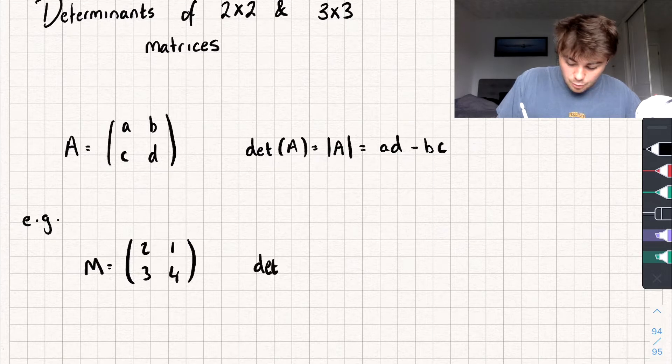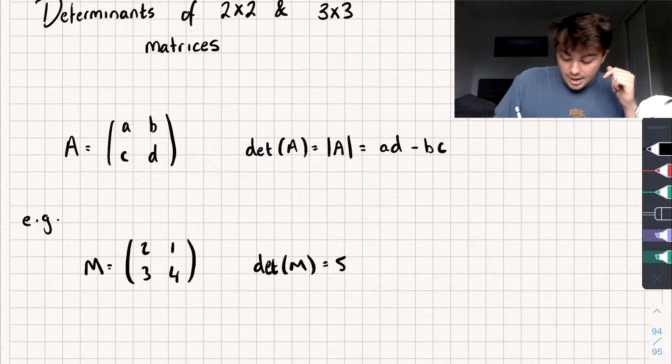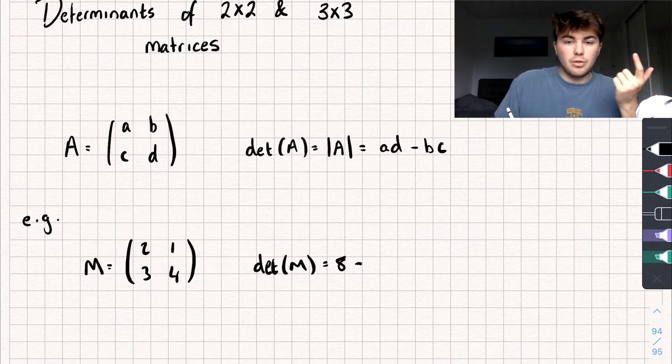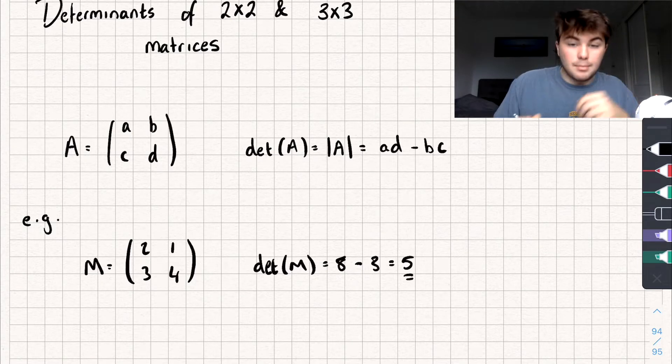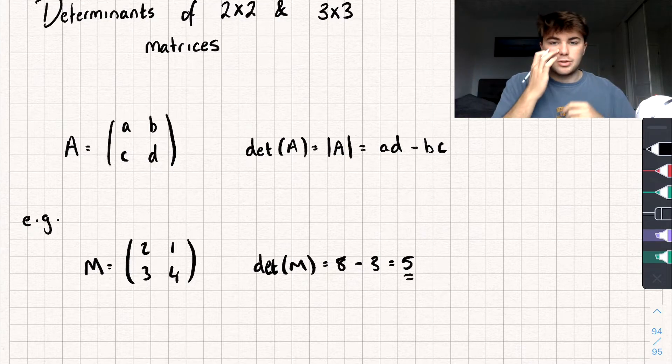Then the determinant of M, or the det of M, we could find as doing 2 multiplied by 4, so 8 subtract 1 multiplied by 3, which is 3, and we get the determinant of matrix M is 5. So that's pretty straightforward.